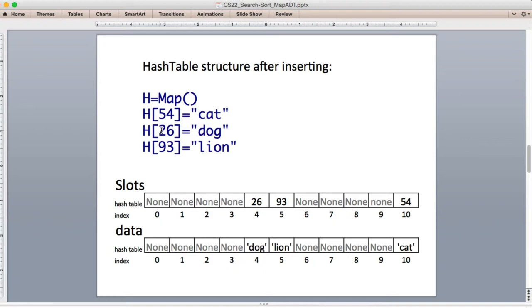So then when we store dog, it's going to figure out what slot is 26, which is slot 4. So slot 4 in both lists, one list will hold the key and the other list will hold the data, which is called the value. So every time we go to store something, it will find the appropriate slot and store the key and the value like that.